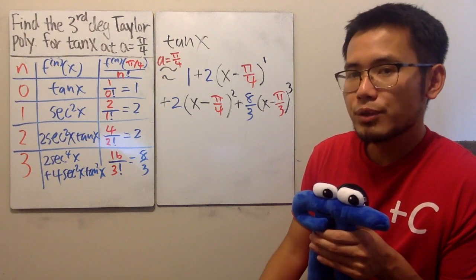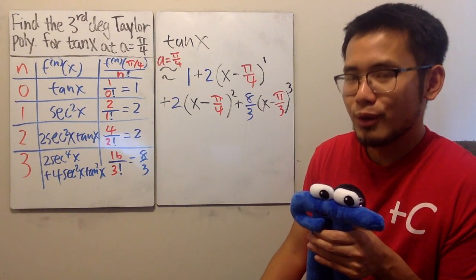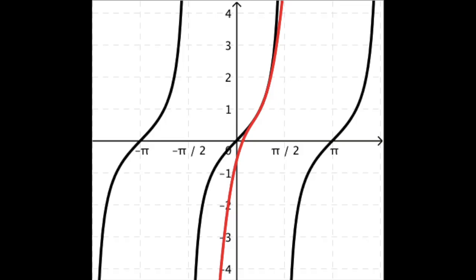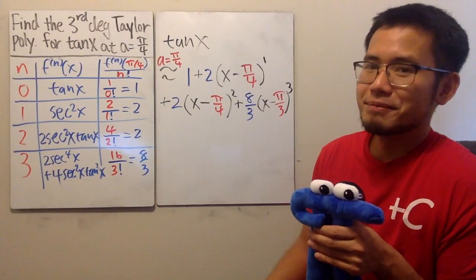So, now have a look on the screen. We have tangent x, and also its Taylor polynomial. Alright, so that's it.